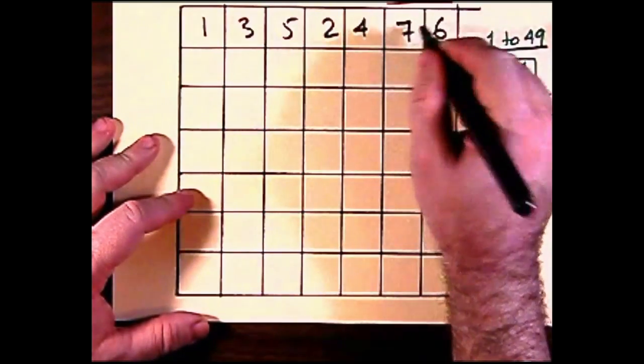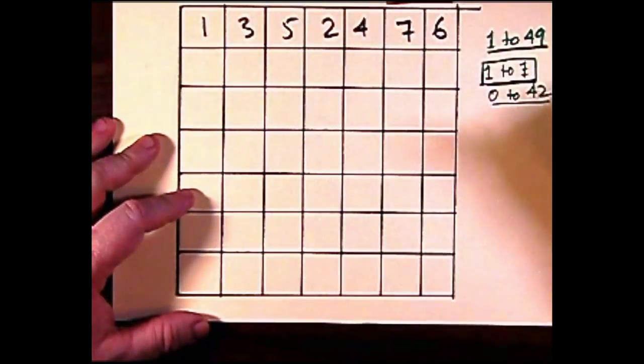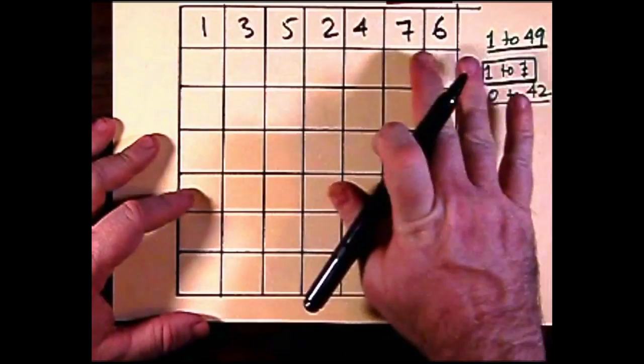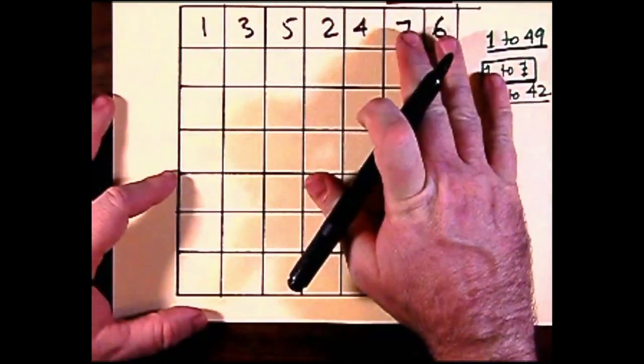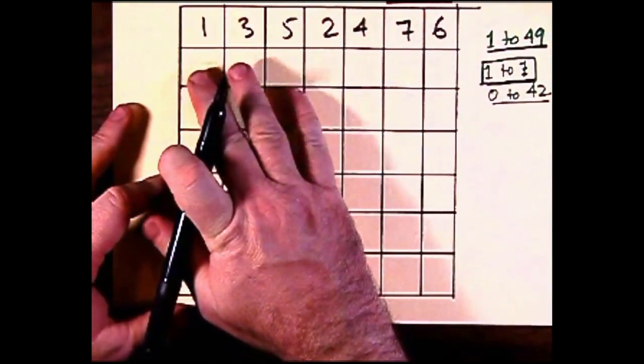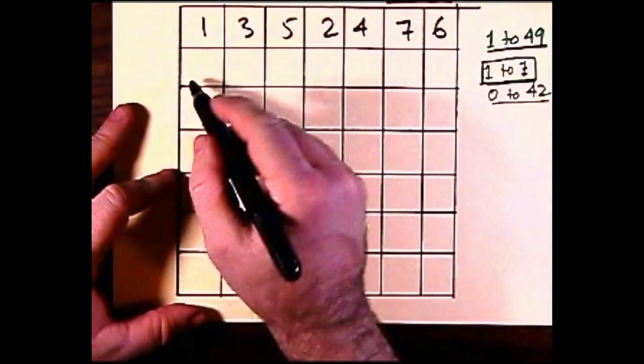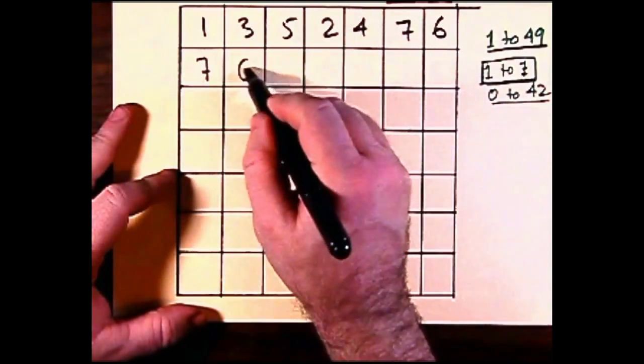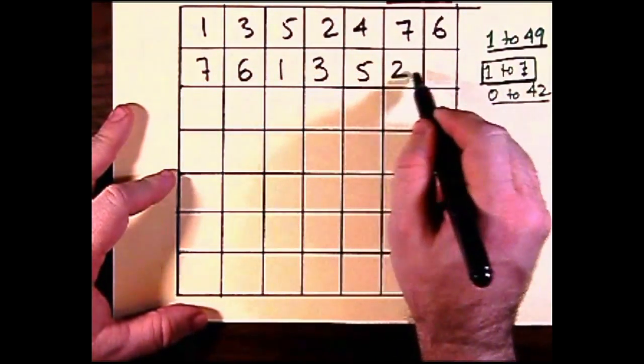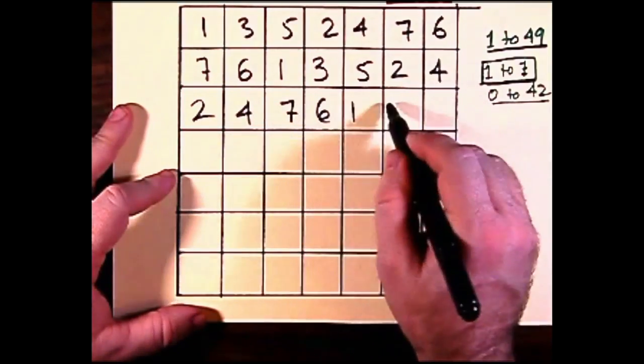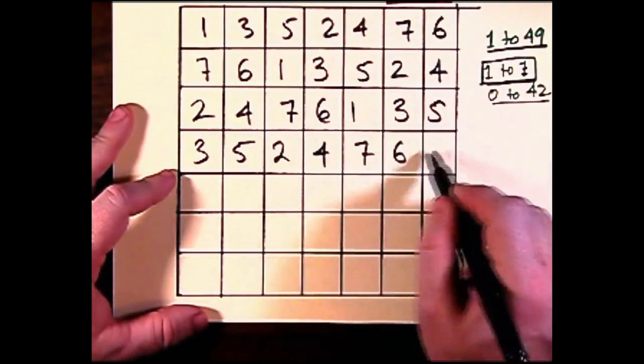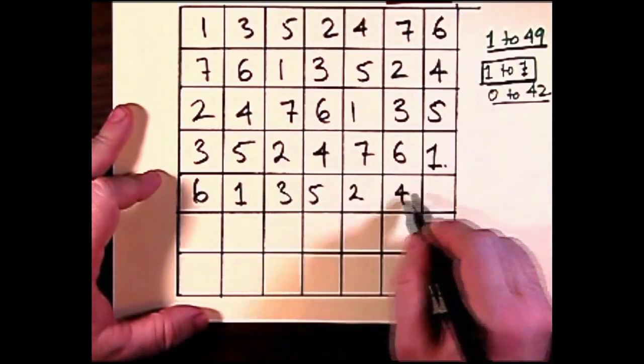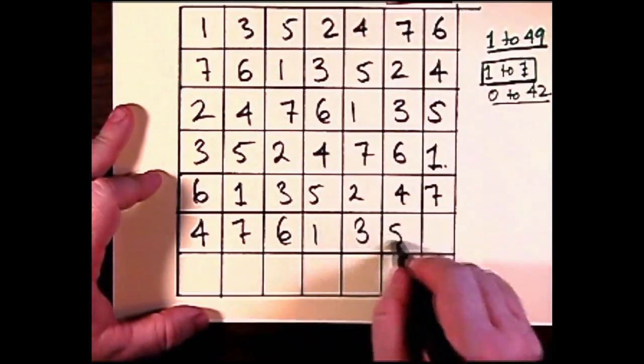Then what I do is take the last two on the first row and make them the first two of the new row, and put the remaining five in order across that second row. So 1, 3, 5, 2, 4, which are the first five numbers, become the last five numbers of the second row. I do the exact same thing to every other row based on the row previous to it. There you go, that is a fully filled out square.